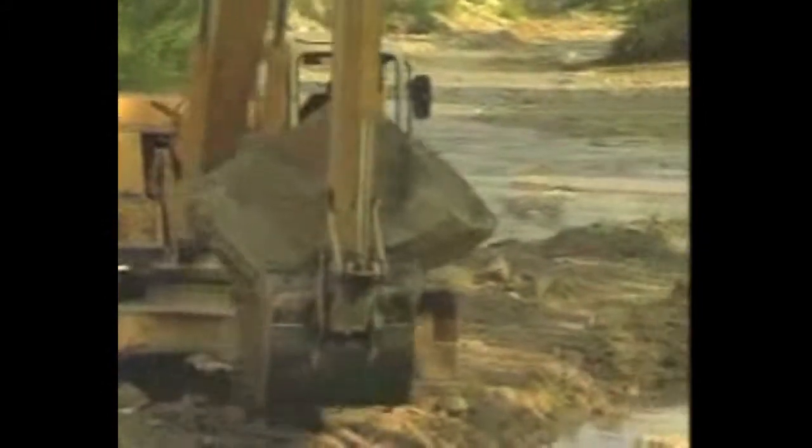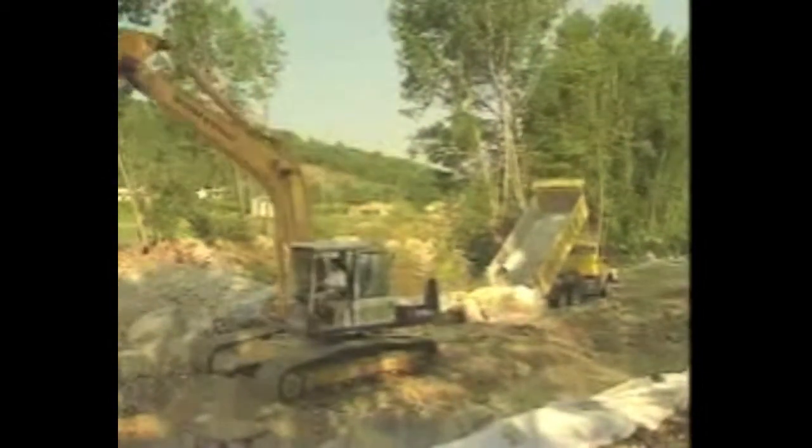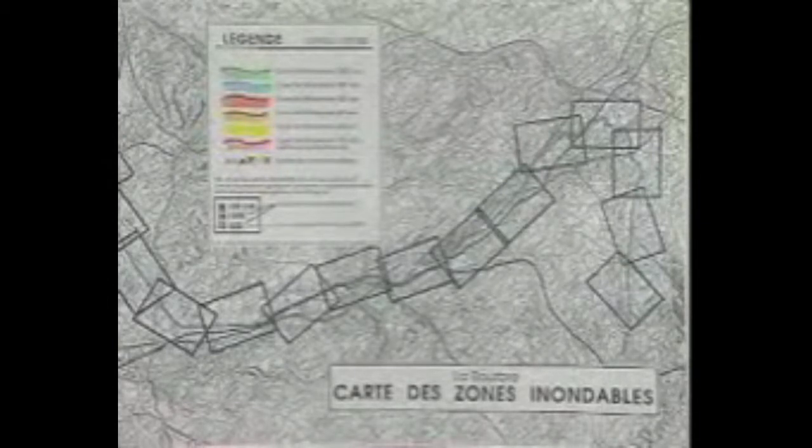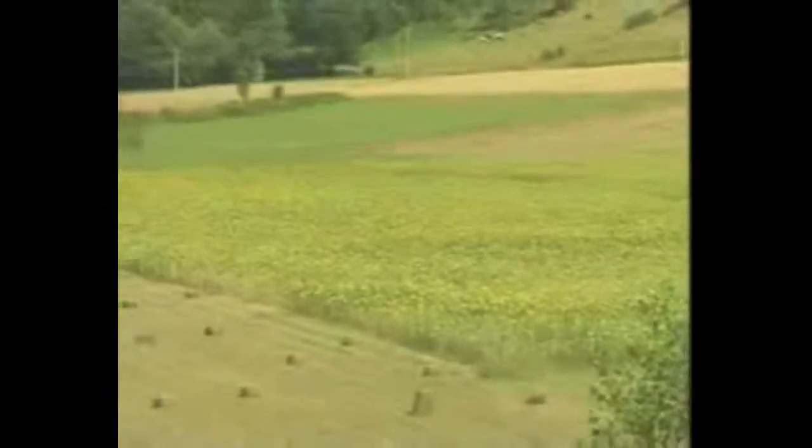Cela signifie que ce n'est pas nécessairement à l'endroit où il y a eu les inondations qu'il faut réaliser des travaux. Avant d'engager des travaux, il faut vérifier si le phénomène est particulièrement rare ou non et si les aménagements envisagés ne vont pas induire des risques plus importants dans des secteurs plus sensibles. Concrètement, l'étude d'inondabilité de la Bourbre a eu deux résultats : la modification du plan d'occupation des sols et la création de bassins de rétention.